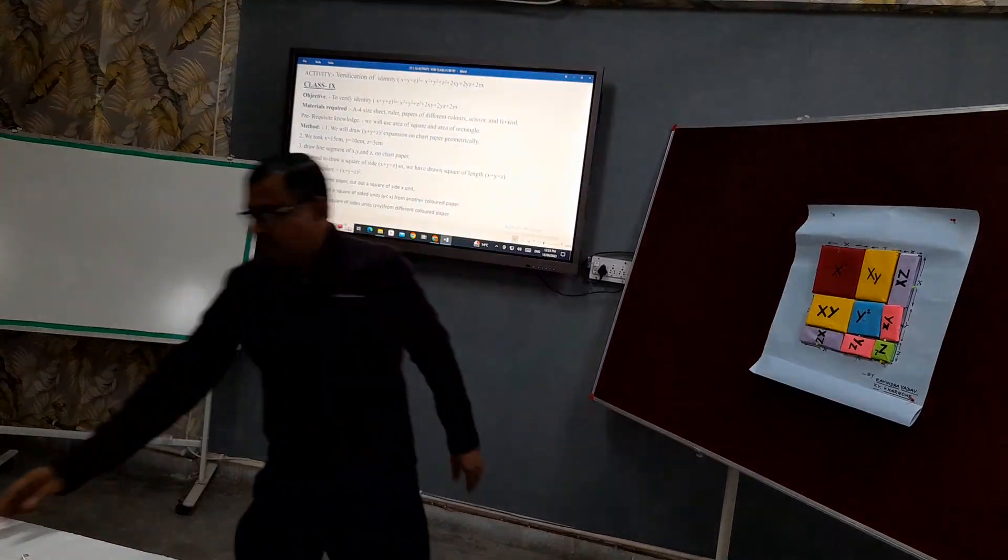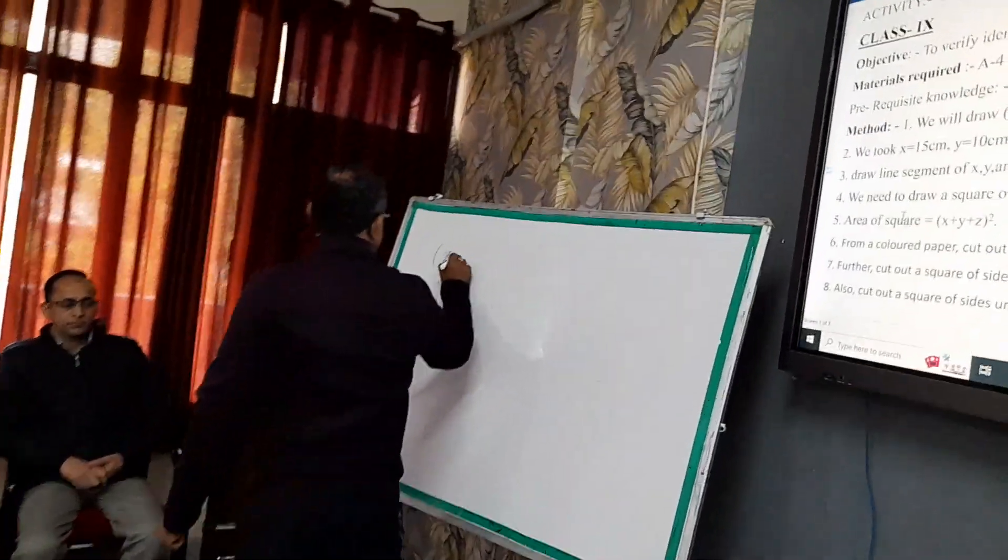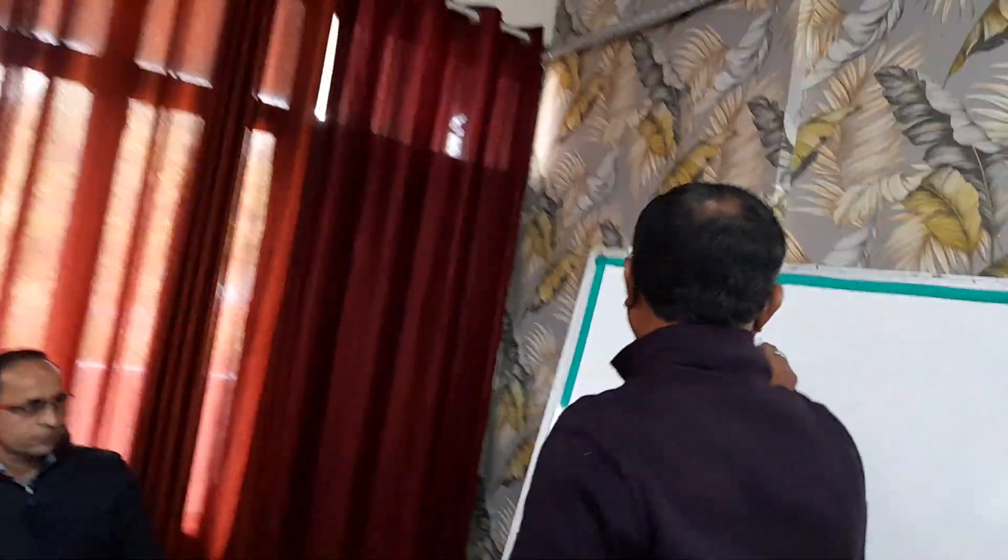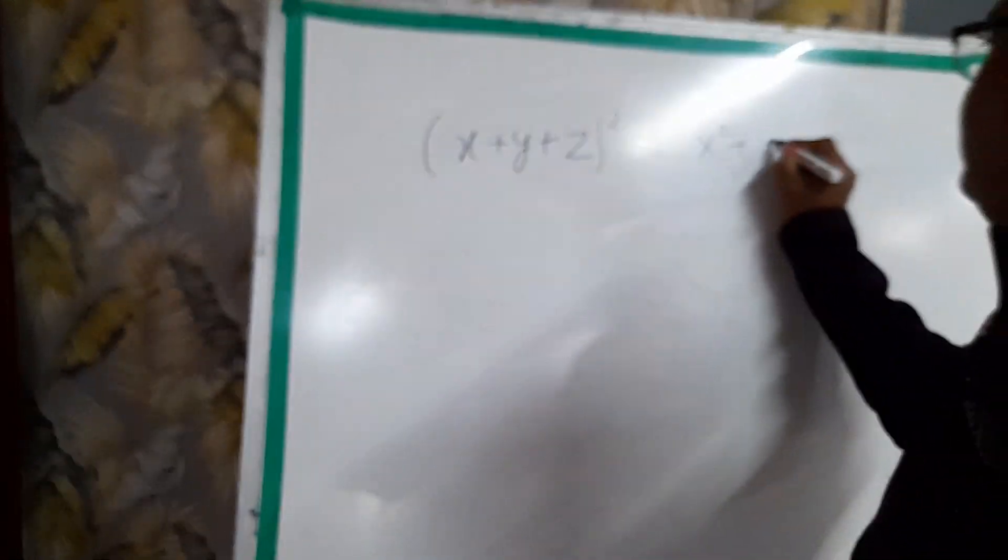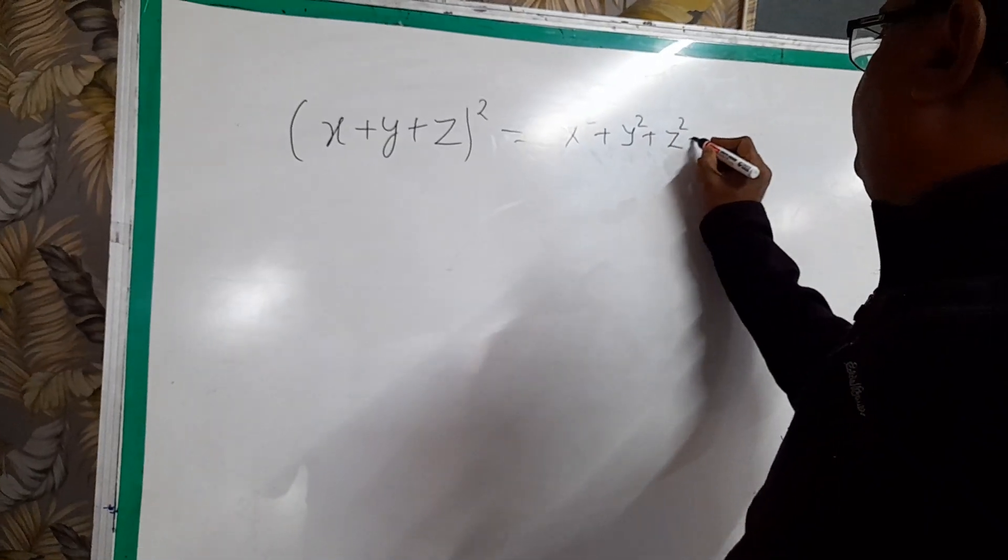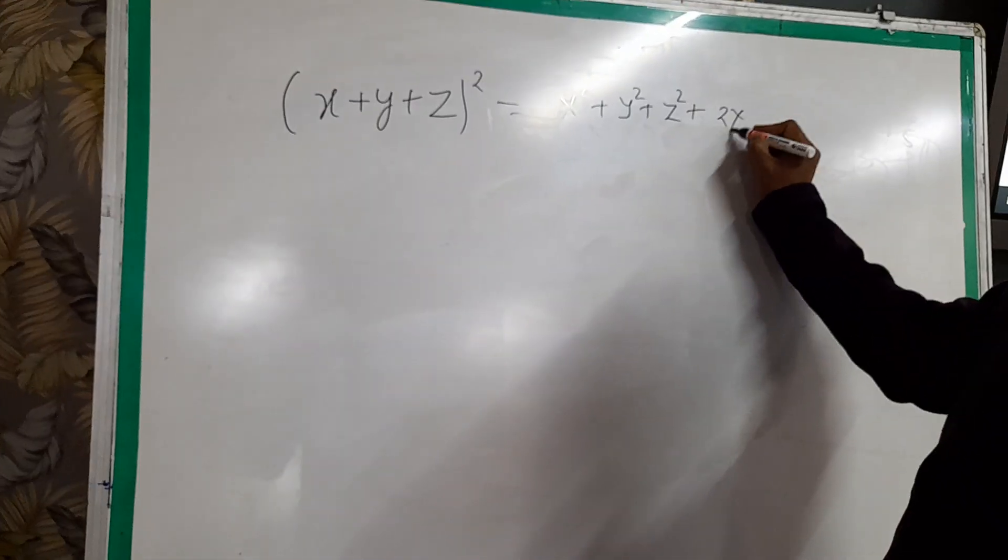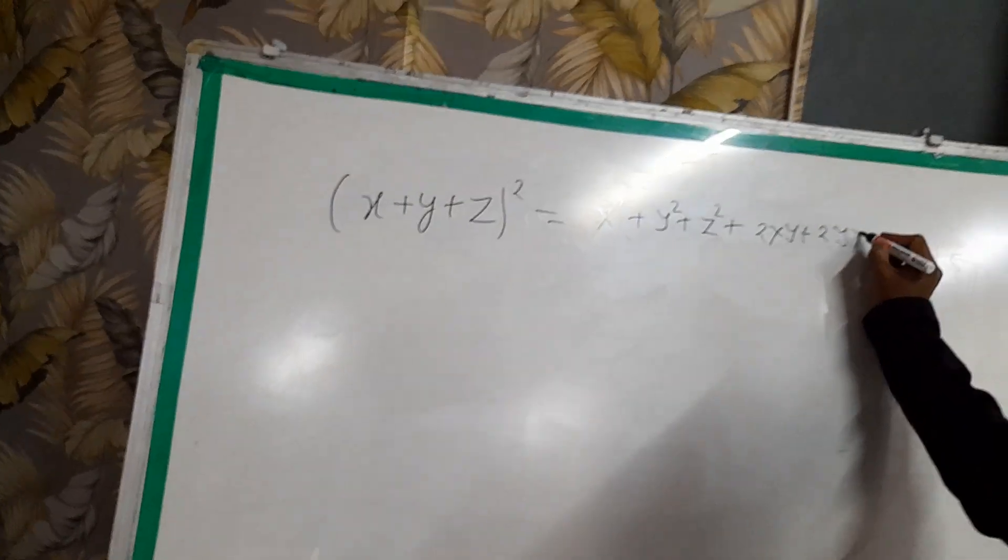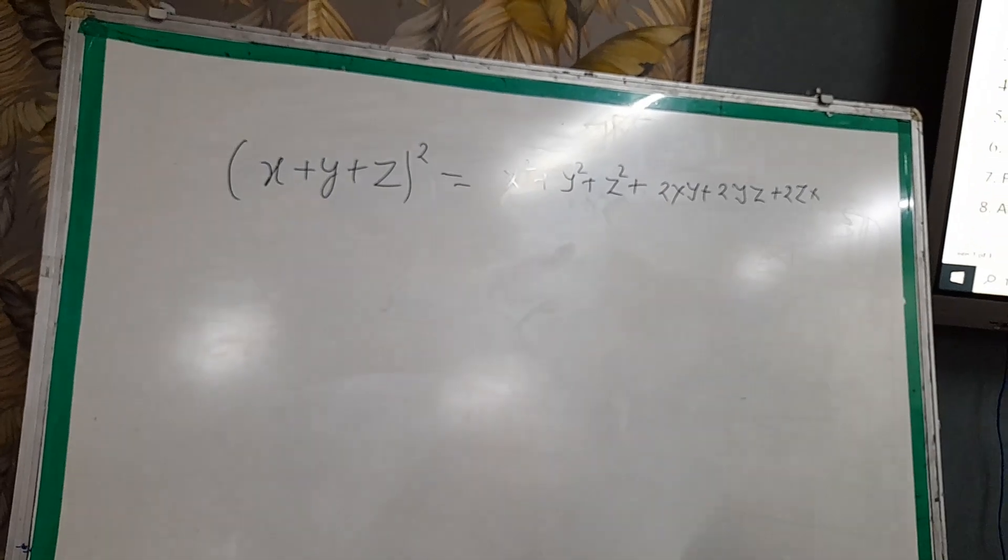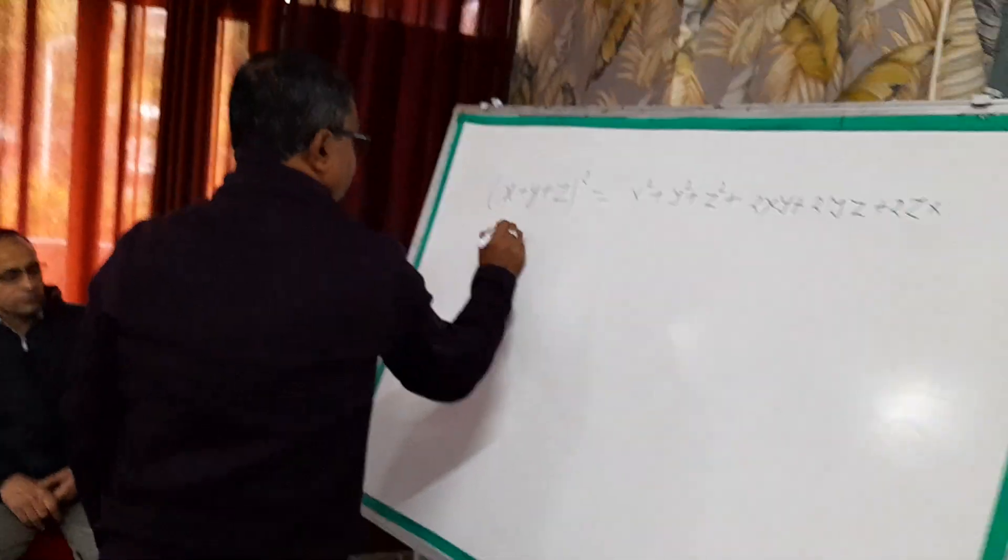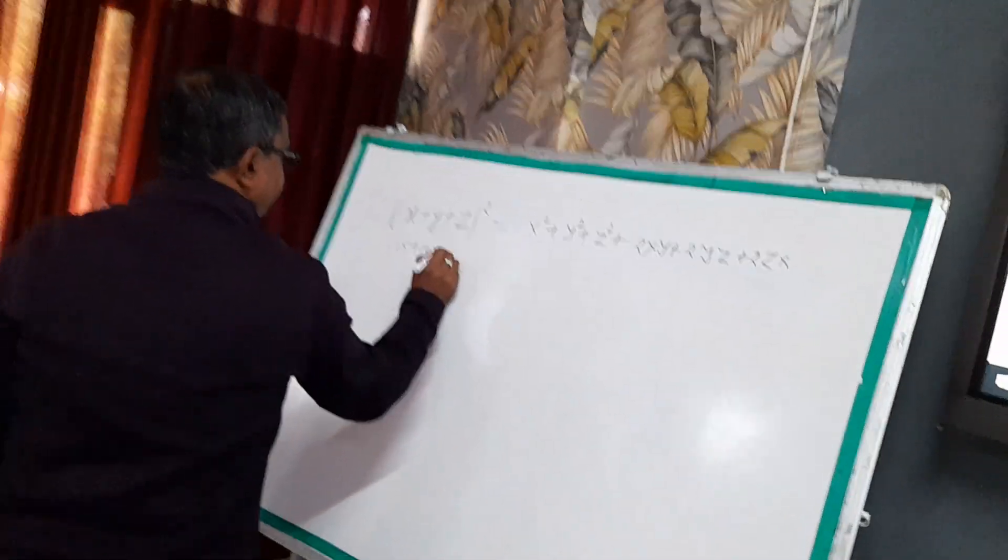We can also do it algebraically by substituting the values. x plus y plus z whole square equals x squared plus y squared plus z squared plus 2xy plus 2yz plus 2zx. By substituting the values x equals 15, y equals 10, and z equals 5.